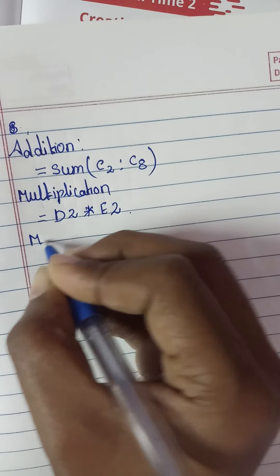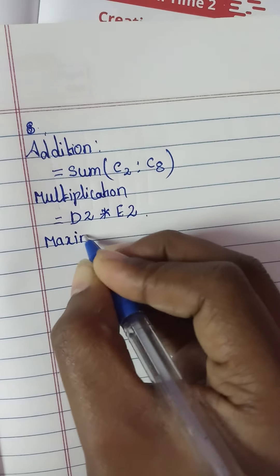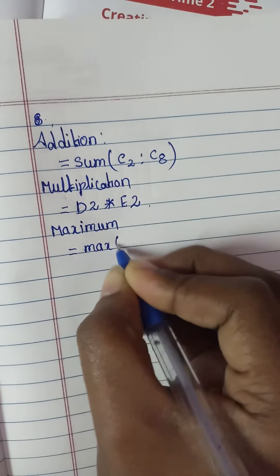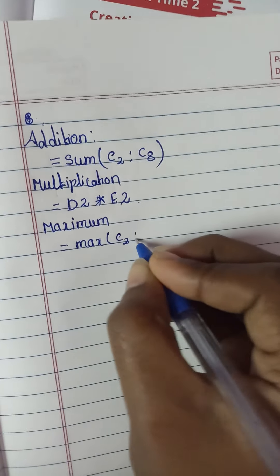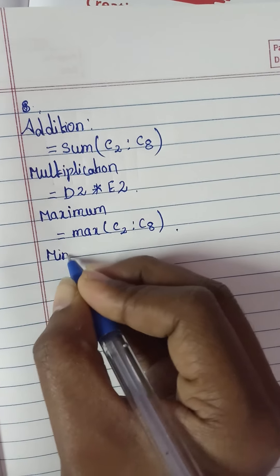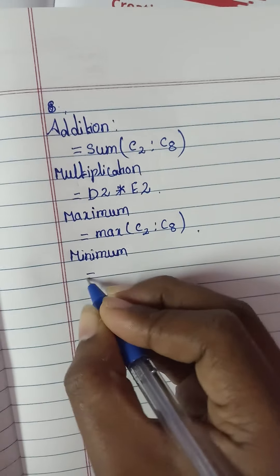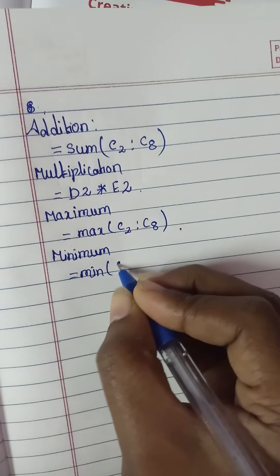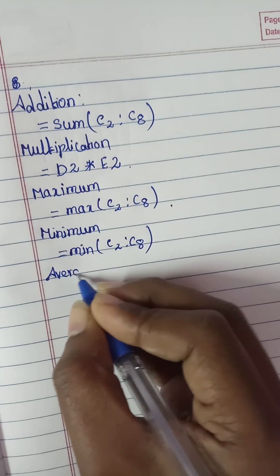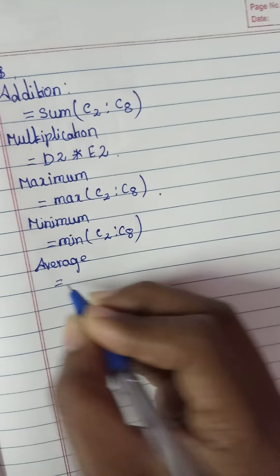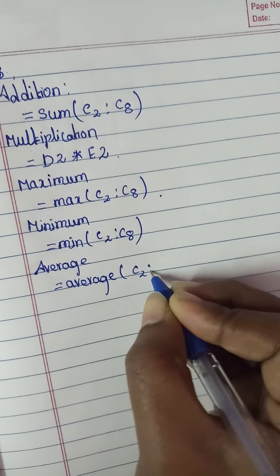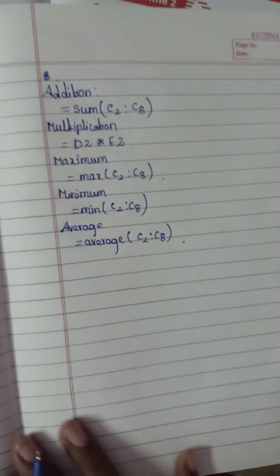To find the maximum value, I can use the function: =MAX(C2:C8) - this is also an example. If I need to find the minimum value: =MIN(C2:C8). And the last one is average: =AVERAGE(C2:C8). These are the formulas.